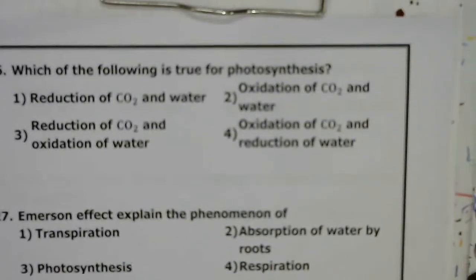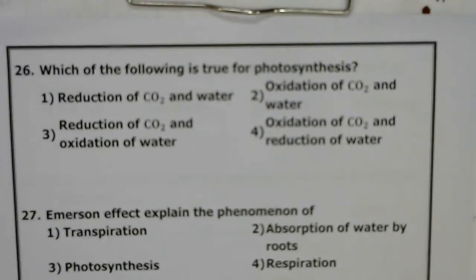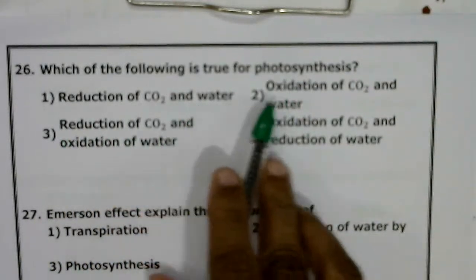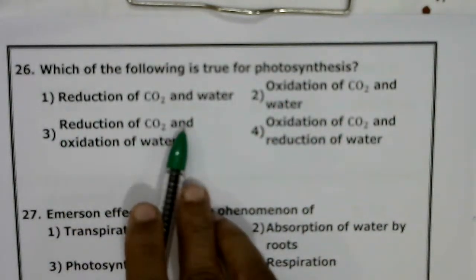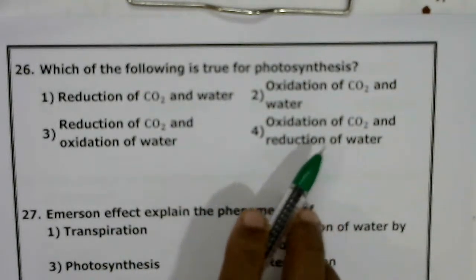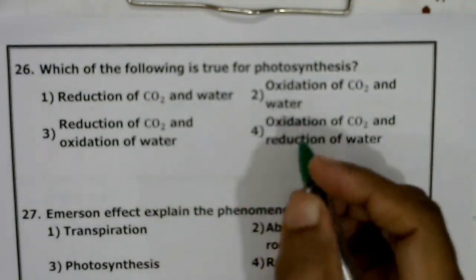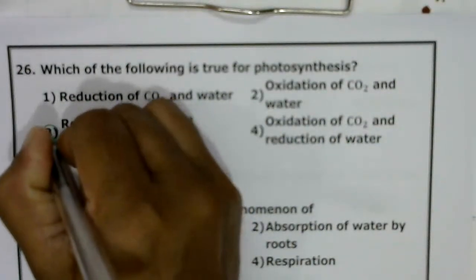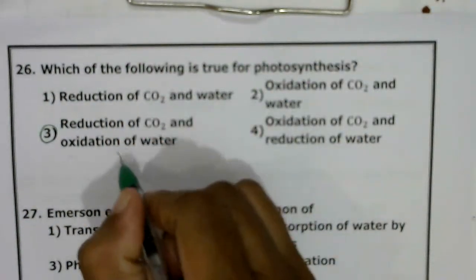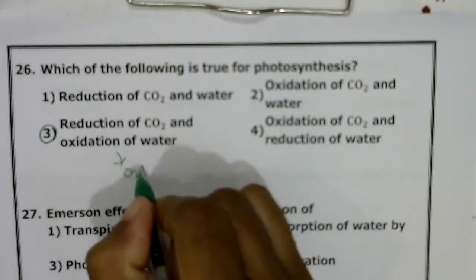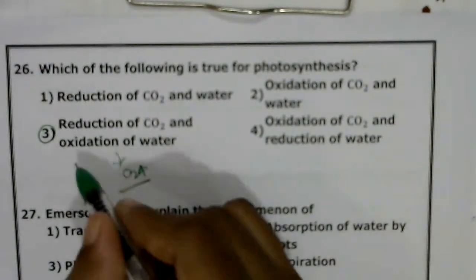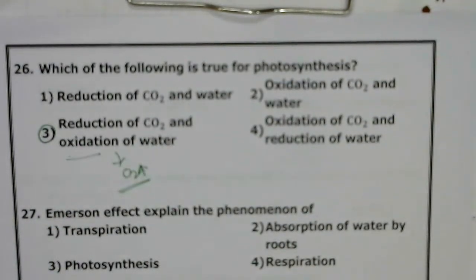Which of the following is true for photosynthesis: reduction of CO2 and water; oxidation of CO2 and water; reduction of CO2 and oxidation of water; or oxidation of CO2 and reduction of water? During photosynthesis, CO2 is reduced to carbohydrates, and water is oxidized — O2 is a byproduct of photosynthesis due to oxidation of water. Correct answer: third option — reduction of CO2 and oxidation of water.